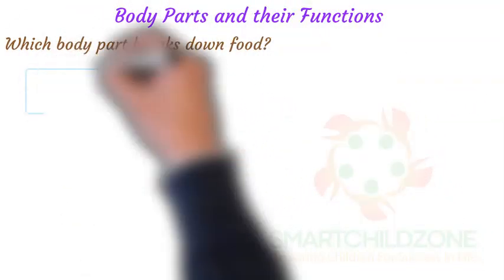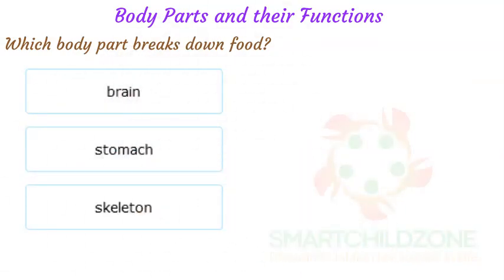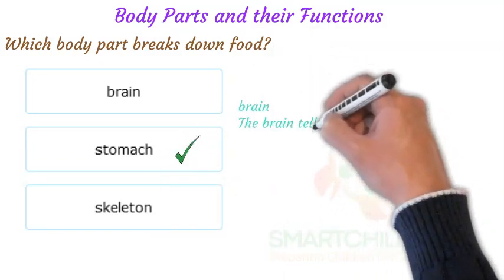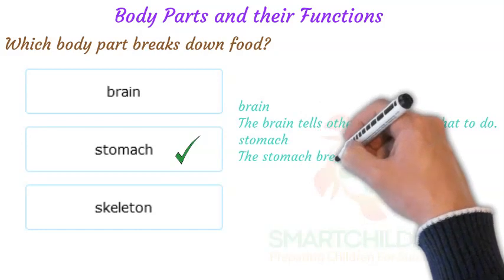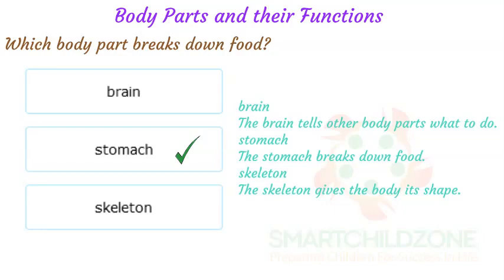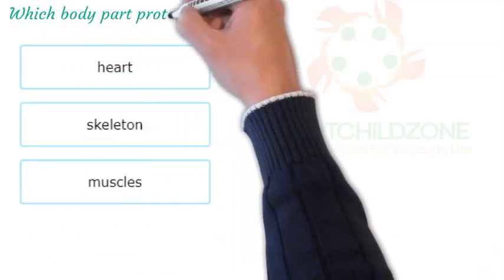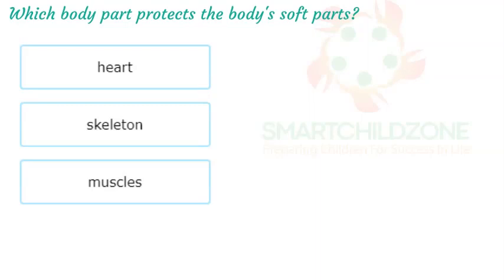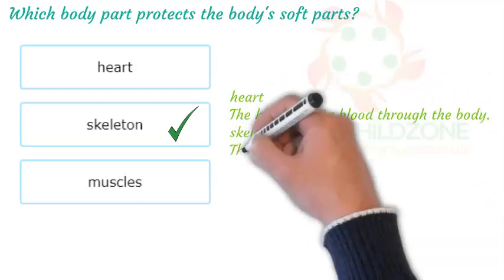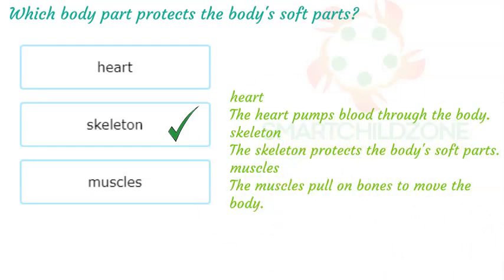Which body part breaks down food? The brain tells other body parts what to do. The stomach breaks down food, while the skeleton gives the body its shape and protects the body's soft parts. The muscles pull on bones to move the body.